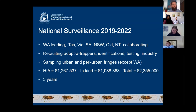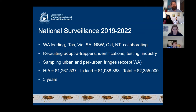Western Australia is leading this project, with collaborating state governments in Tasmania, Victoria, South Australia, New South Wales, Queensland, and the Northern Territory. The responsibilities of those states and territories include recruiting adopter trappers who put out the sticky traps, doing their own identifications on everything on the traps, testing any found TPP for CLSO, and liaising with industry within their states. DPIRD in Western Australia backs them up with secondary identifications and testing as needed.